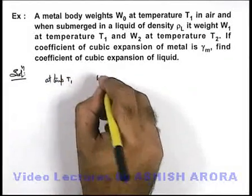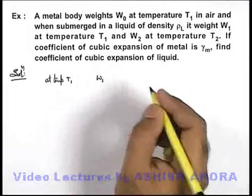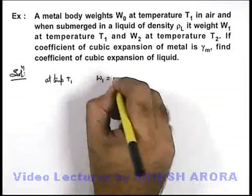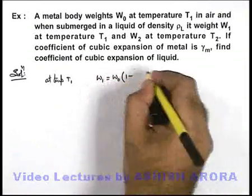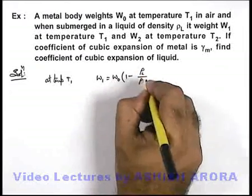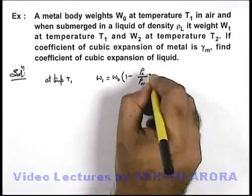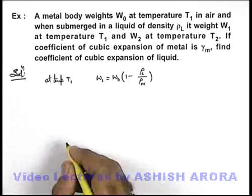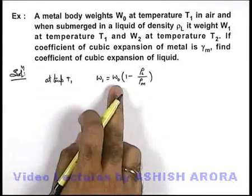We know that the apparent weight W₁ in a liquid when a body is submerged can be given as W₀ multiplied by (1 - ρₗ/ρₘ), density of liquid upon density of solid which is in this case a metal body. So this is the relation between W₁ and W₀.